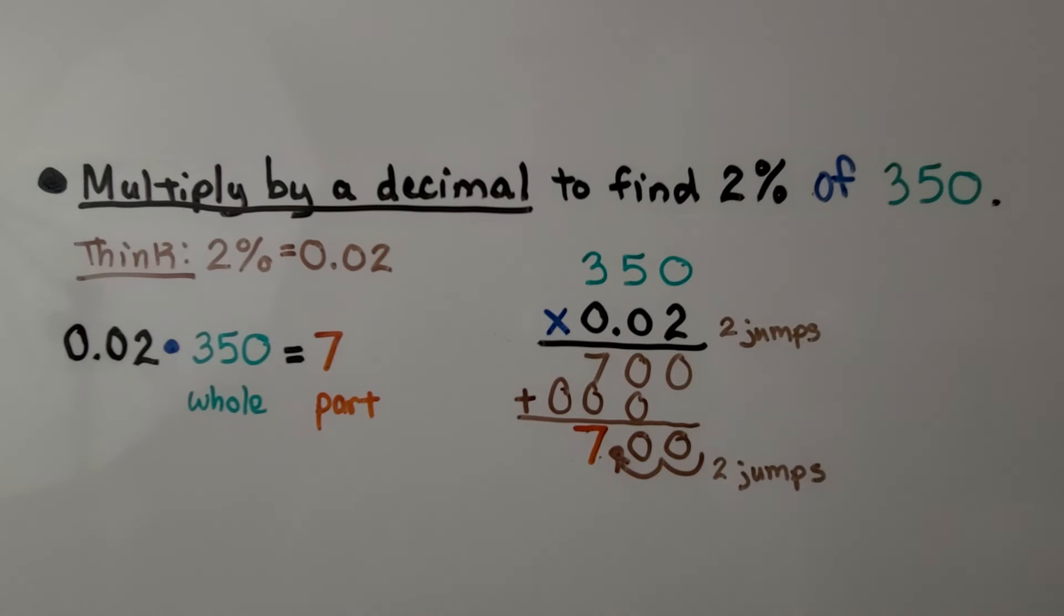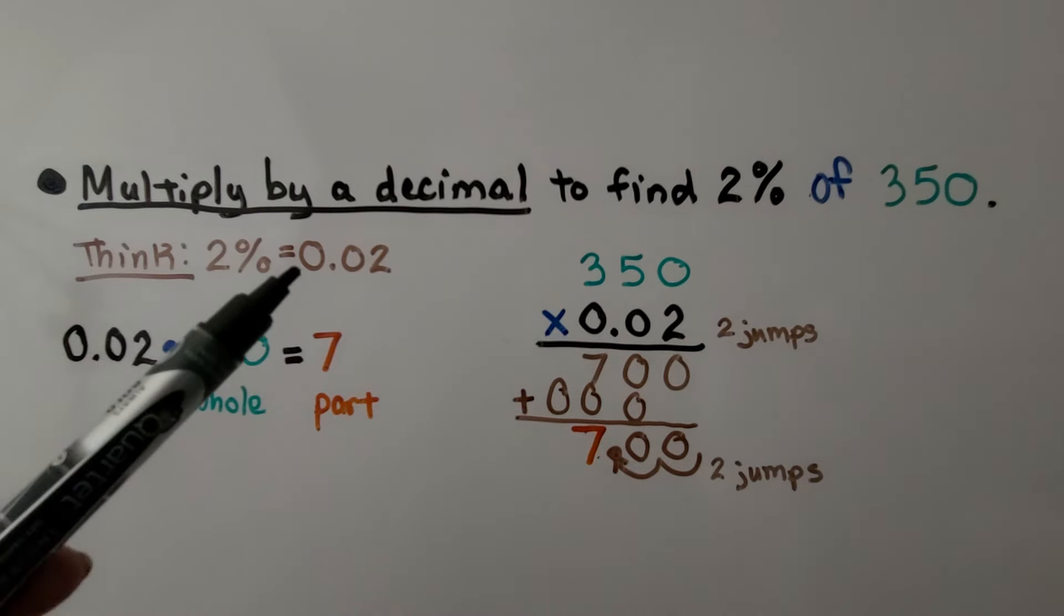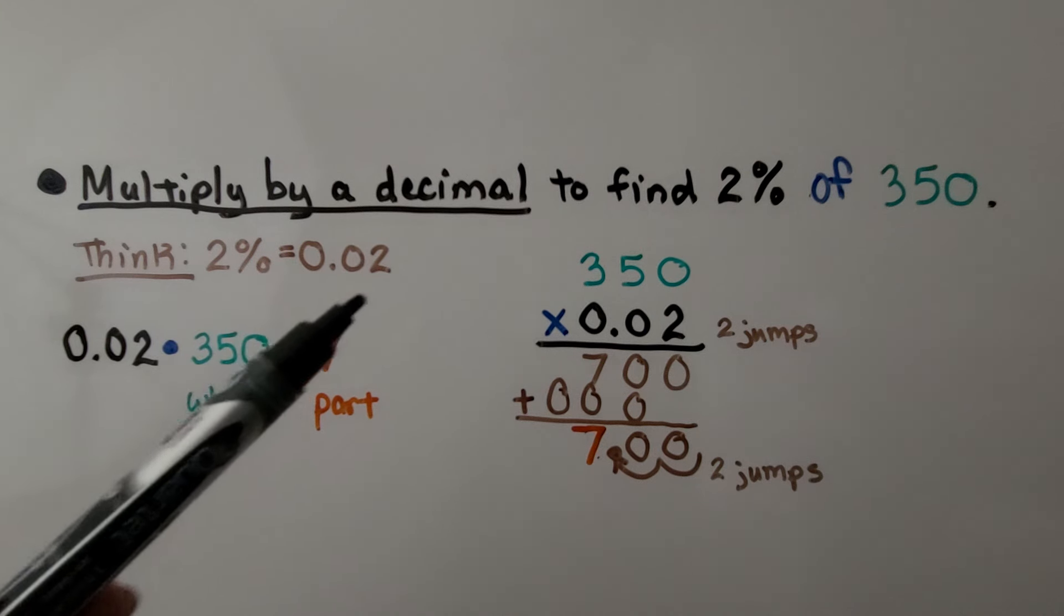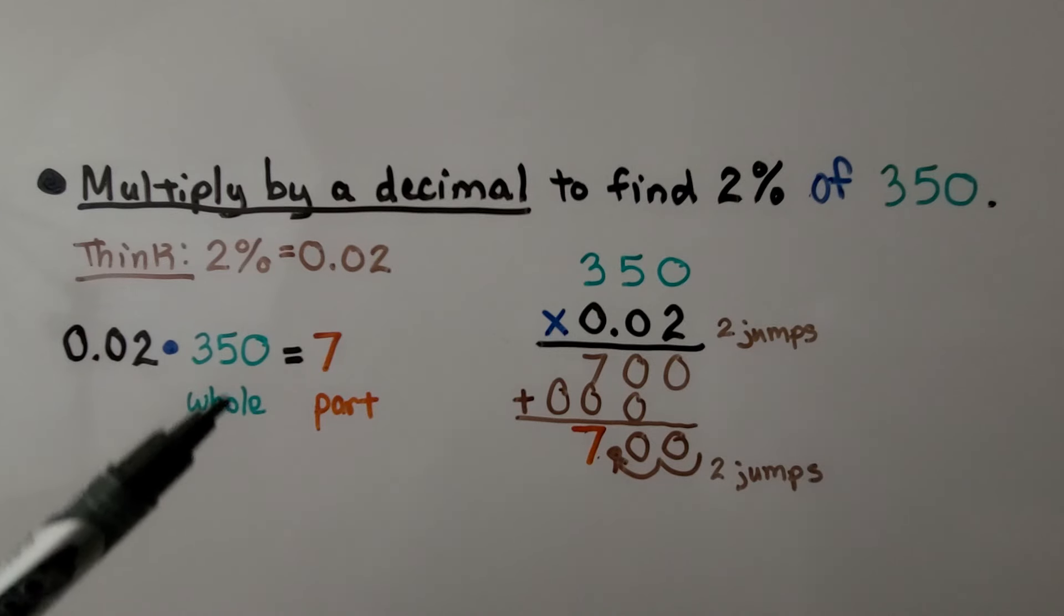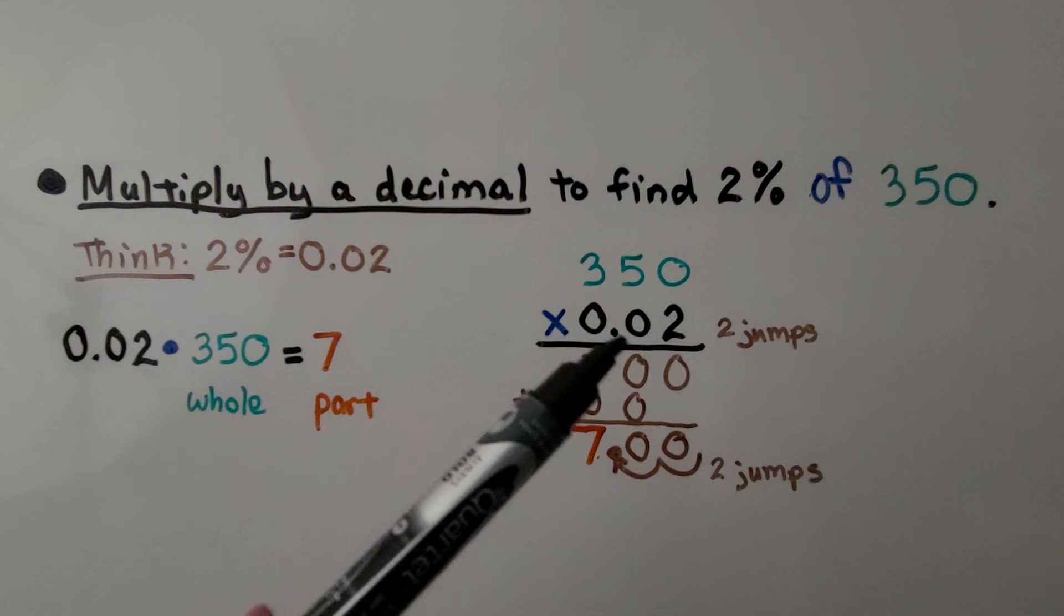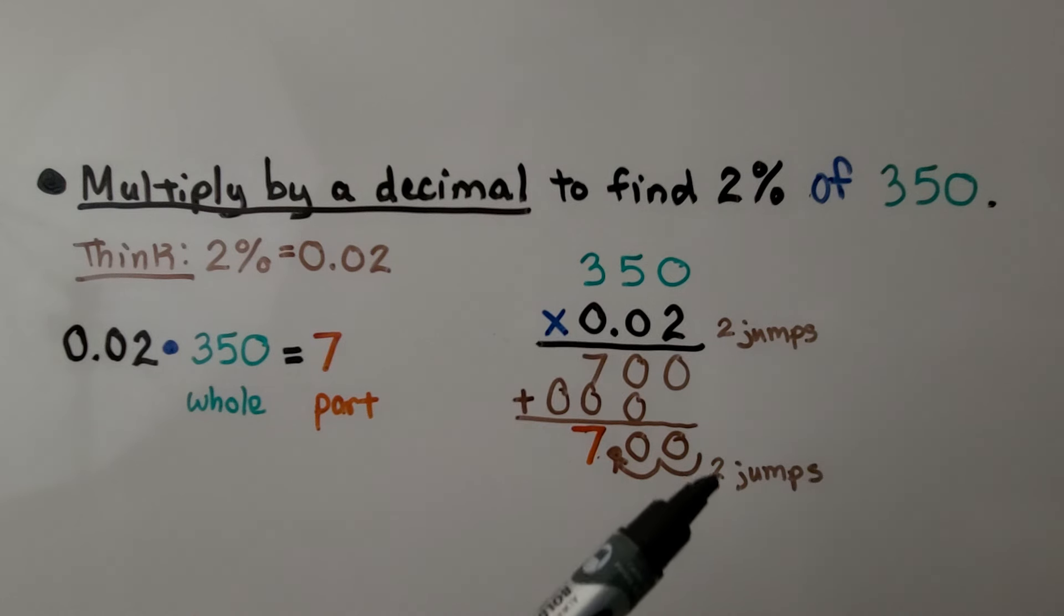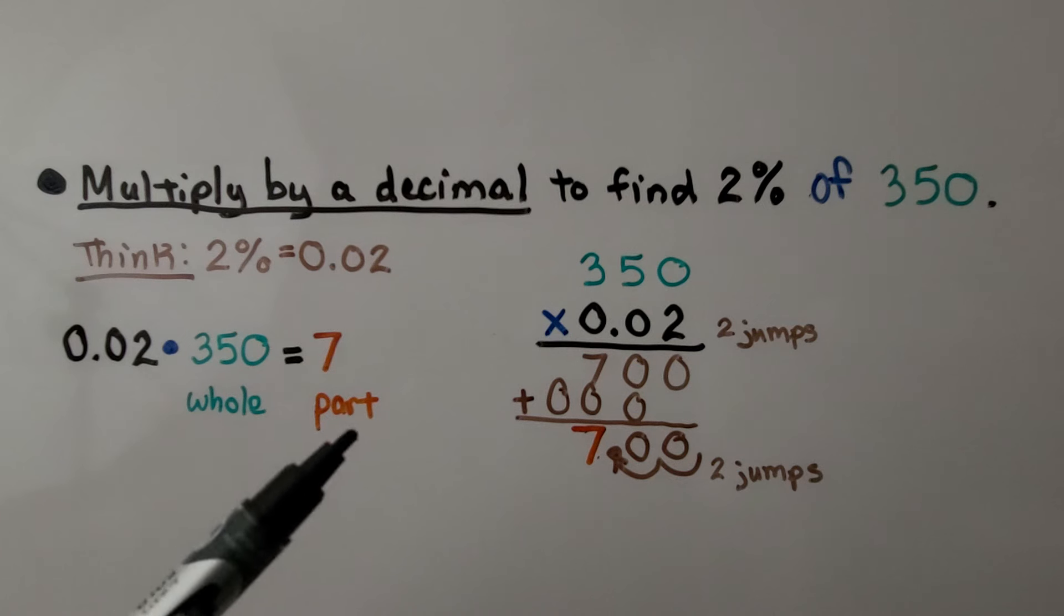Here's another example of multiplying by a decimal to find 2% of 350. We think, well, 2% is 0.02, so we're going to multiply 0.02 times 350, that's the whole. And when we do, we see there's two jumps in the equation, so there's going to be two jumps in the product. It's equal to 7, and that's the missing part.